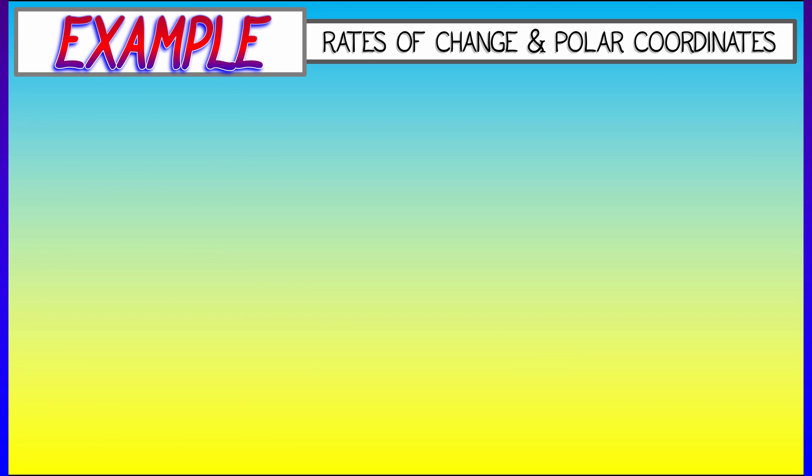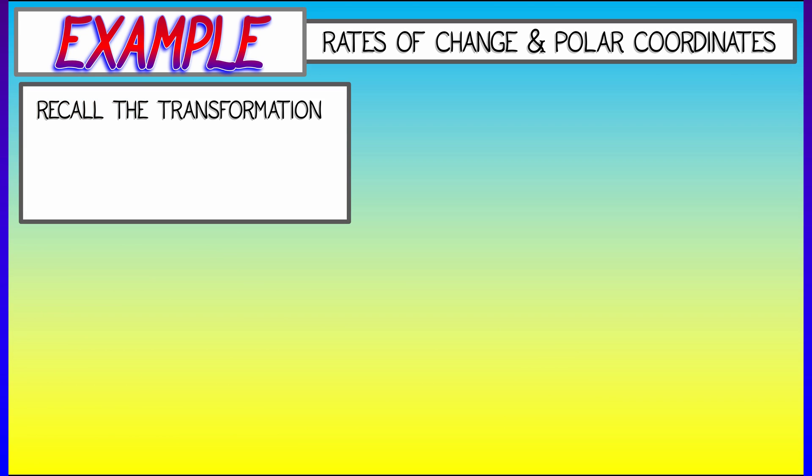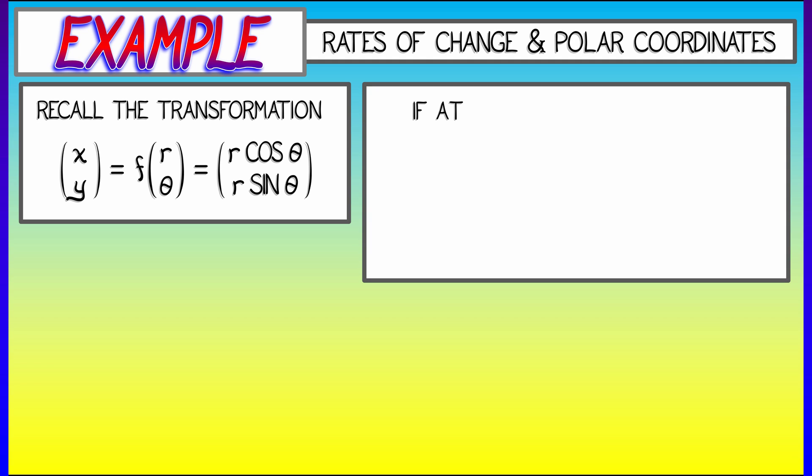That's a good example, but it's a little abstract. Here's something a little more grounded. Recall the polar coordinate transformation that takes polar coordinates r and theta and gives you Euclidean coordinates x and y through the usual formula, r cosine theta, r sine theta. Let's call that function f.